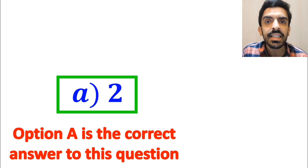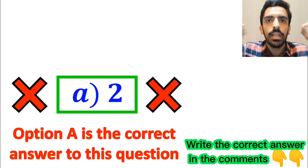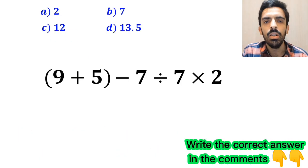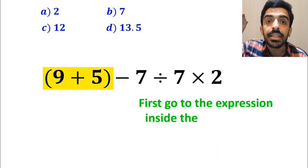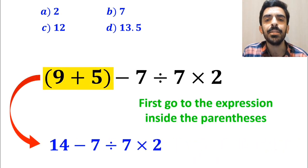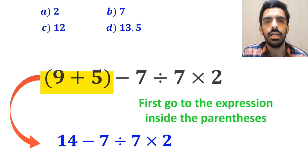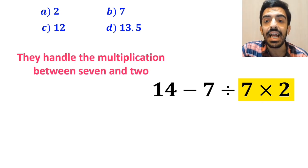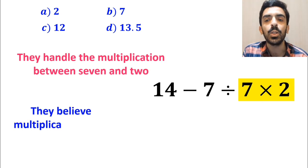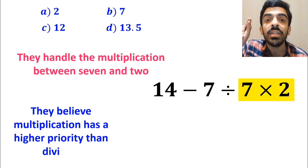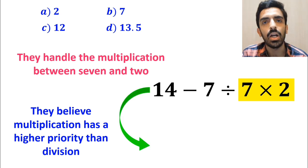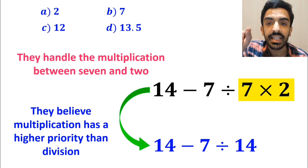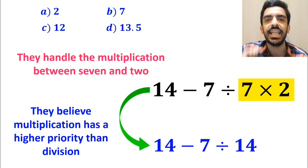However, this answer is absolutely wrong. Some other people, when solving this question, first go for the expression inside the parentheses and write this expression as 14 minus 7, divided by 7, times 2. In the next step, they first handle the multiplication between 7 and 2, because they believe multiplication has a higher priority than division. So they rewrite this expression as 14 minus 7, divided by 14.